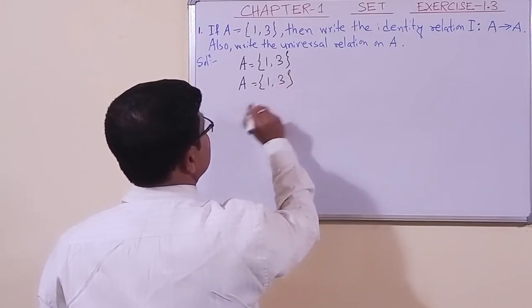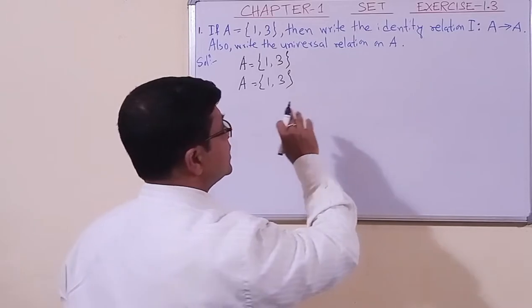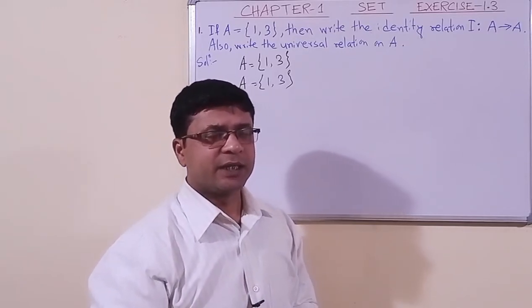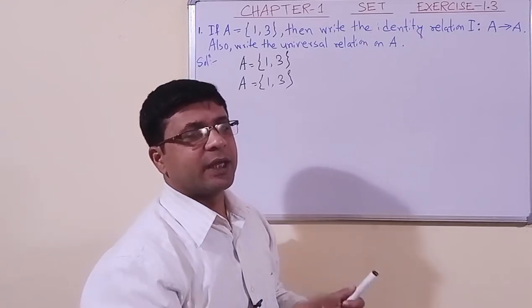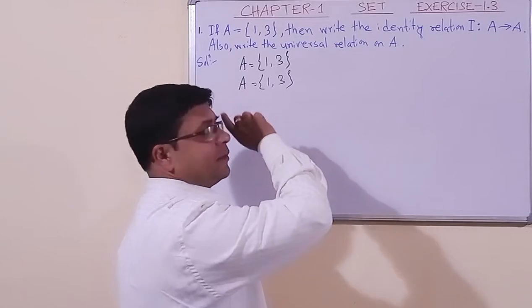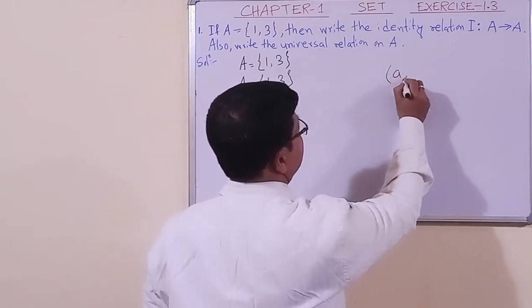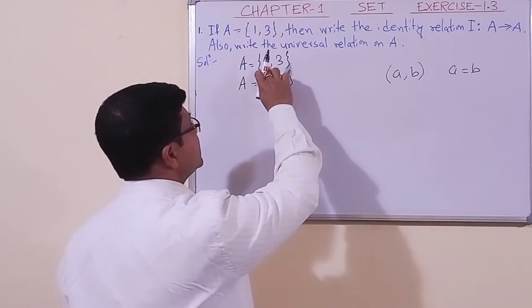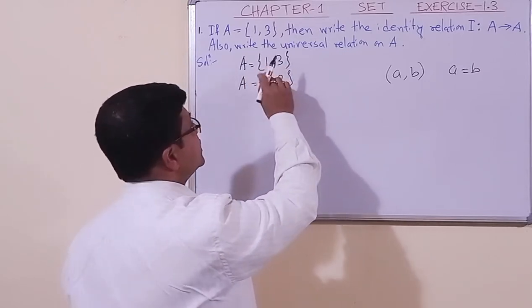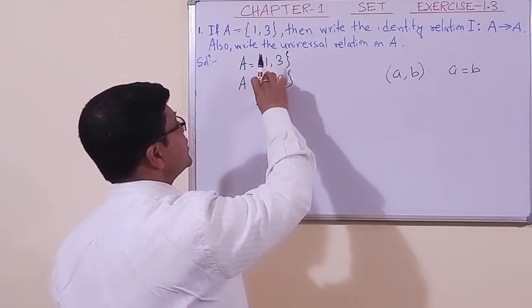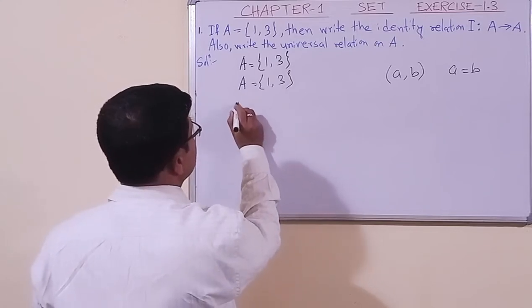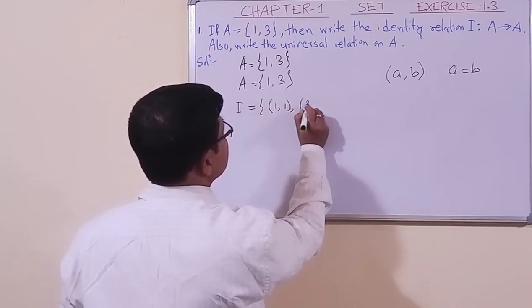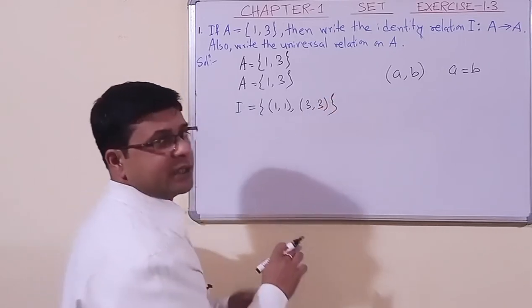When you will be expert, with one set only you can do this. Now, identity relation is a relation where the two components — that is, the ordered pair (a, b) — have a and b equal. So we will take those ordered pairs where the first component and second component are equal: when 1 equals 1 and 3 equals 3. So the identity relation I = {(1,1), (3,3)}.